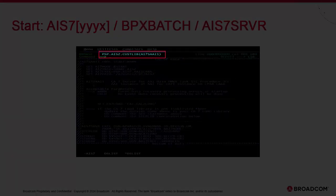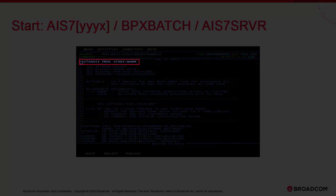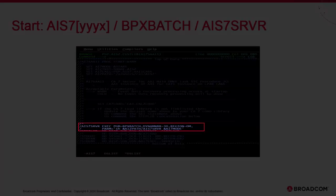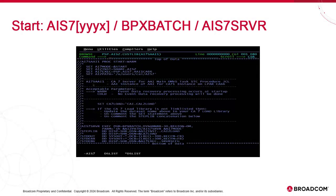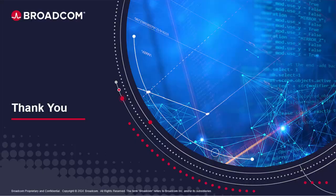This is the Cuslib member where the execution JCL can be found. It must be copied to a system procedure library. This is the default generated name for the server STC based on the instance code XXXY, which you would specify to automation so it starts automatically. The important section is the statement describing the execution of PGM BPXBatch, invoking the AIS7SRVR execution module passed as a parameter.